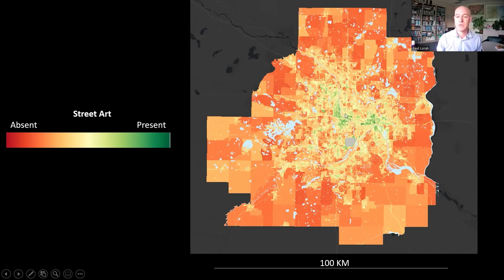There are the two downtowns — Minneapolis and St. Paul. There's sort of a suburban donut around the city, and the model's predicting that we're going to find far fewer instances of street art there.